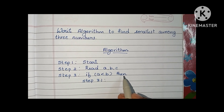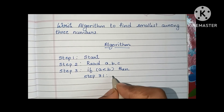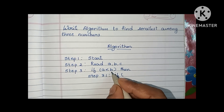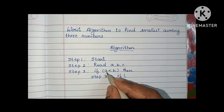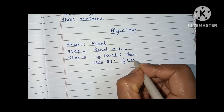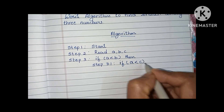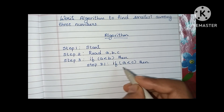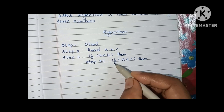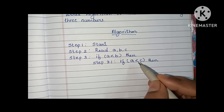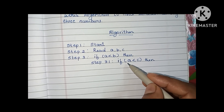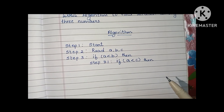If a less than b is true, it means a is lesser than b — so a is the smaller of the two. In step 3.1, we have to again compare a with variable c. If a is less than c and this condition is also true, then a is the smallest variable.